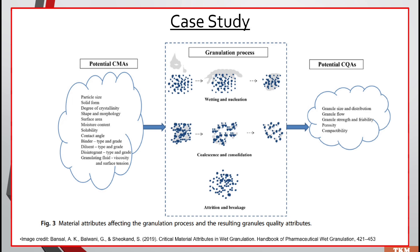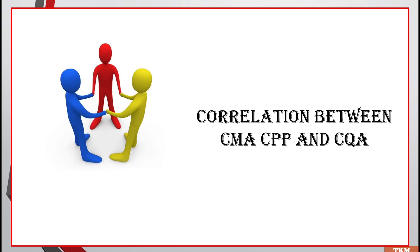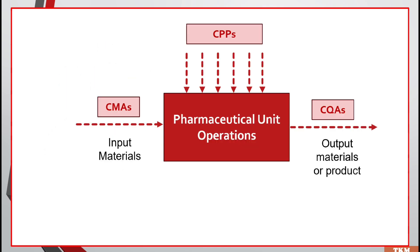After understanding critical quality attributes, critical process parameters, and critical material attributes, we need to understand how these three are correlated. In this diagram, CMA represents input material attributes — when using API and excipients, those attributes of those materials, combined with CPP, the process parameters. Taking the simple example of tableting: the different processes include granulation, drying, compression, and coating, along with the parameters associated with those processes. Any variation in both CMA and CPP affects the quality of the output material. That's why these three are correlated with each other.